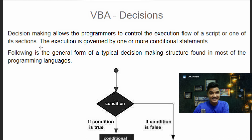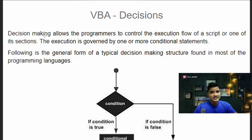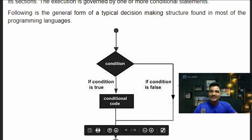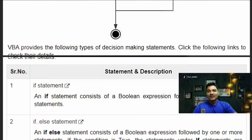Hello guys, welcome back to my YouTube channel. Today we are going to see how to use decision-making under VBA. Without wasting any time, let's dive into it. First of all, what is decision-making? Decision-making allows the programmers to control the execution flow of a script or one of its sections. The execution is governed by one or more conditional statements.